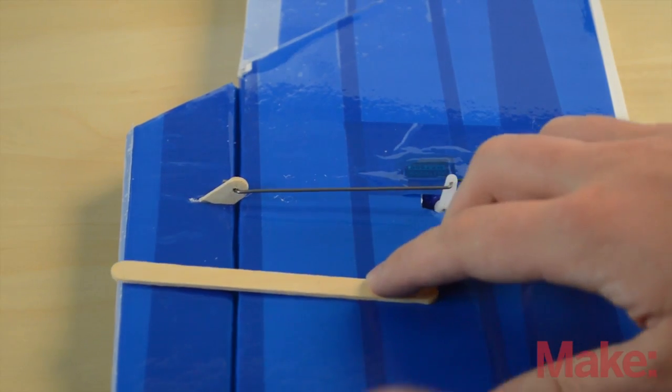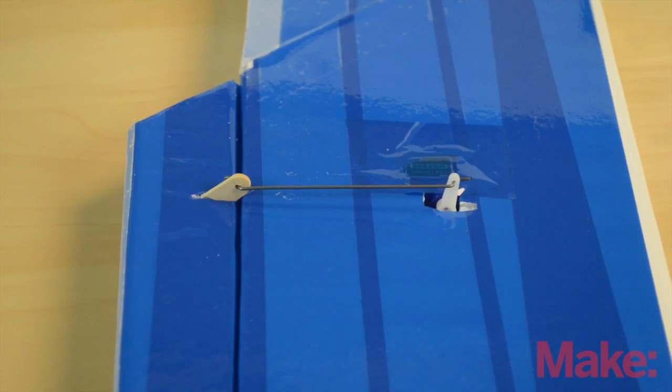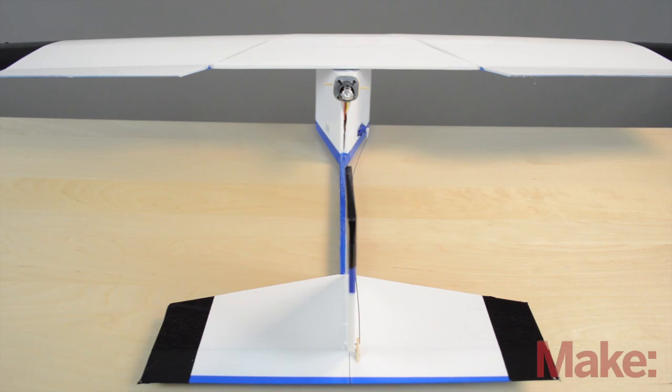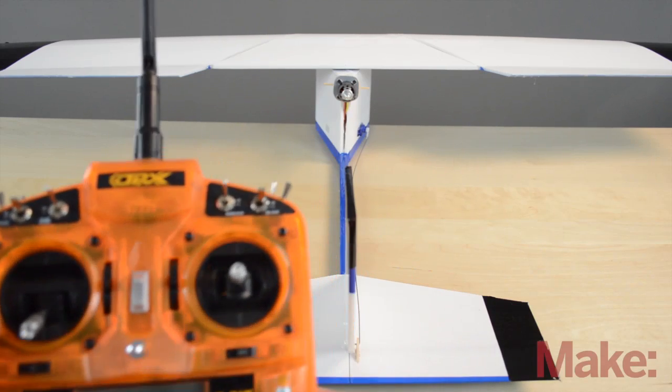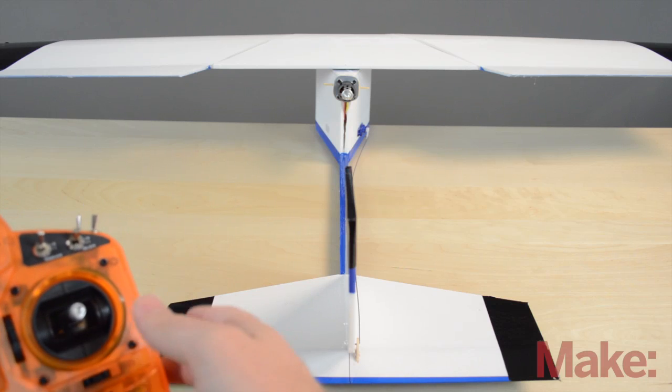Okay, now that we got the control surfaces all leveled out, now we need to check which directions they're moving in. So we're going to flip the plane over now. We have the plane facing away from us and here's our controller. We're going to check this stick over here, this is what we're going to be testing right now.